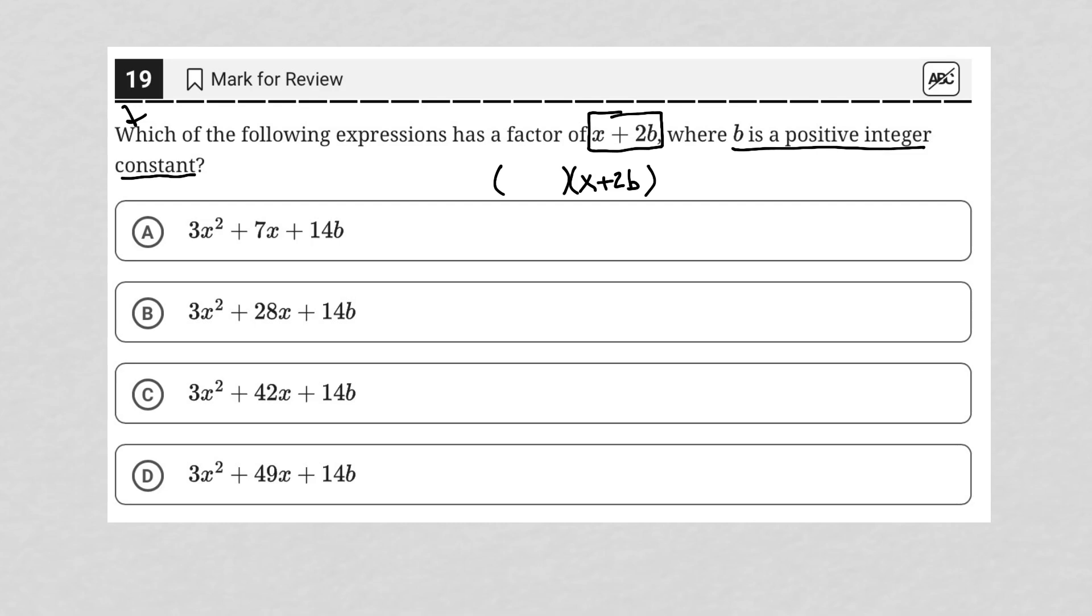So as of right now, I'm using this strategy called plug in information from the question. If the information provided was that x plus 2b is a factor, then therefore I can plug x plus 2b into this set of parentheses here as a factor. Now, what about this set of parentheses? What goes in the front?